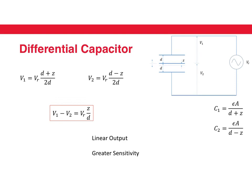If we take the difference of these two outputs, we get a linear dependence of the displacement on the output. Therefore, we have a linear output and greater sensitivity—these are the two advantages of differential capacitors.